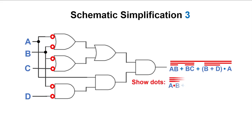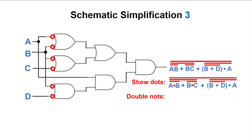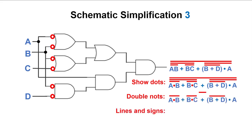Now we demonstrate the simplification on the equation. We show the dots again, then deal with all the double NOTs — all the double lines. The one above the middle plus needs to stay. There's another NOT above A times B, one above B times C, and one above B plus D. Next, we change the lines and the signs — there are lines above four signs. Here they are without the lines, and the signs are changed.